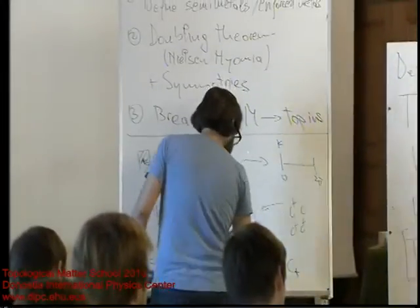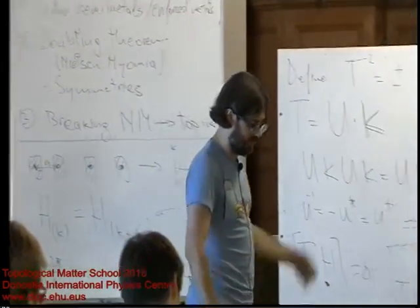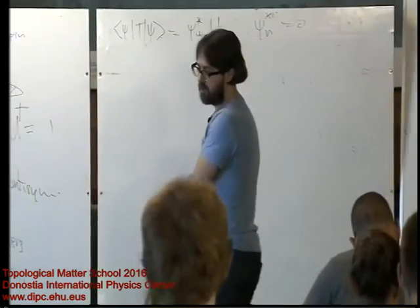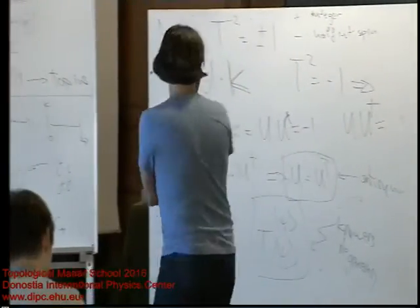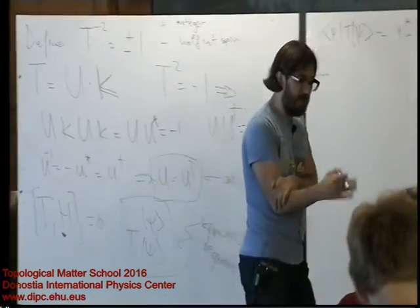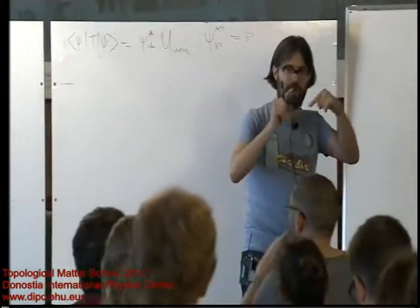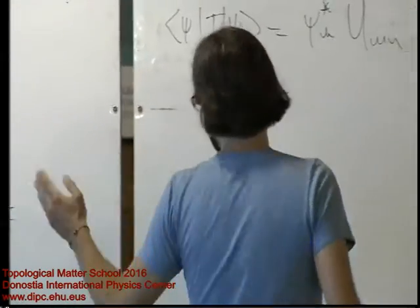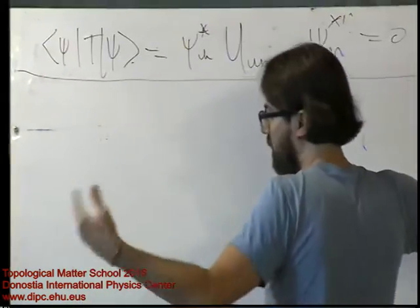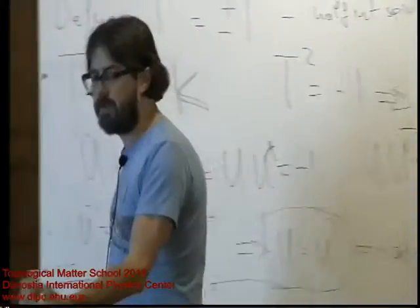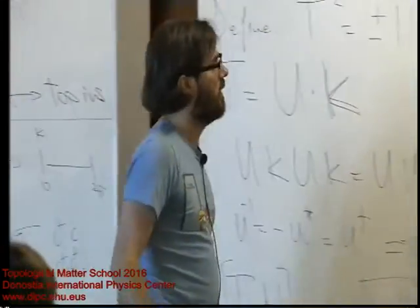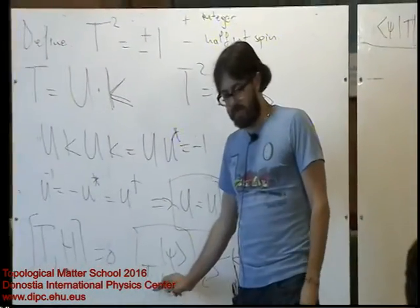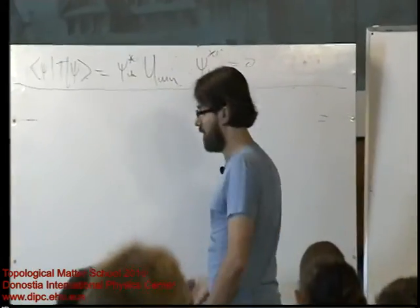If I have an even number of electrons, on the many-body subspace time reversal squares to one. But on the single particle subspace — one being an odd number of electrons — time reversal acts as T², and every single particle eigenstate, whether with disorder or not, has a time reversal pair which is degenerate with it. This is just Kramer's theorem. Now, if I decide to plot energy as a function of momentum, time reversal has another property: it is always local in real space.